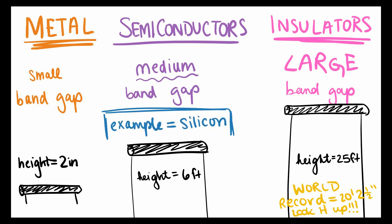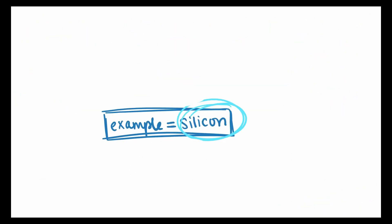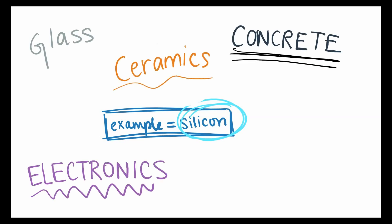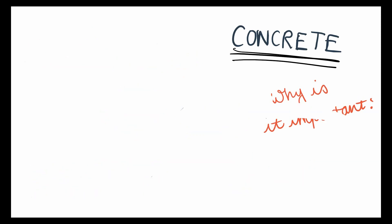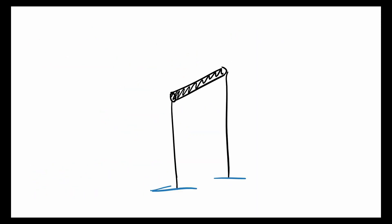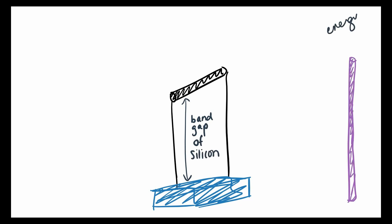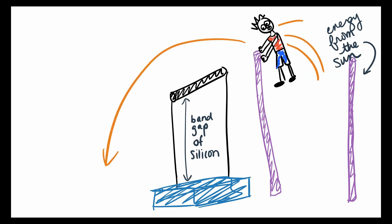I know a lot about silicon because it's a pretty common material. It's used in glass, ceramics, concrete, and most of our electronics. It's also pretty cheap, which makes it really useful. But why is silicon's band gap important here? Let's go back to pole vaulting. Silicon's band gap is the height of our bar, and the energy from the sun is our pole. If the pole's big enough, we can clear the bar, and then the electron can leave the solid.